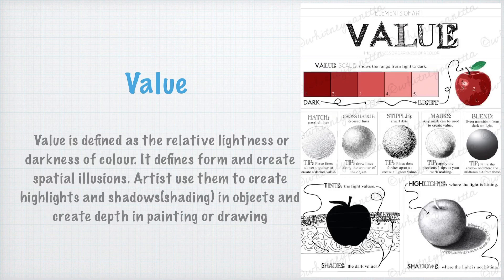Color creates an illusion — it defines form and creates spatial illusion. Painting is a two-dimensional medium with width and length, and color creates the third dimension of depth. Artists use color to enhance highlights and shadows.